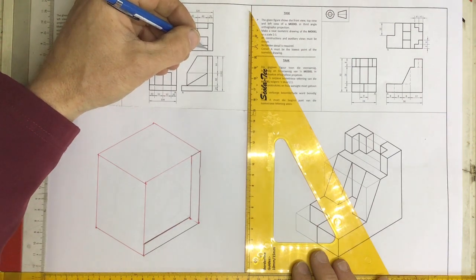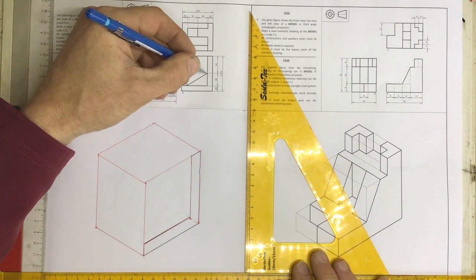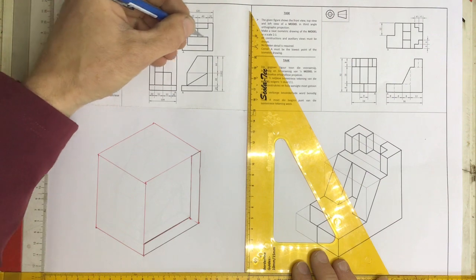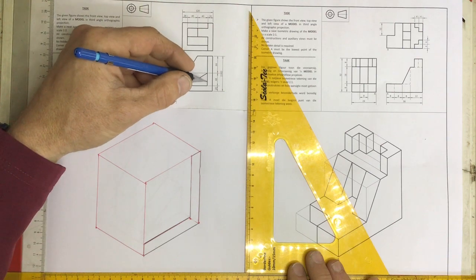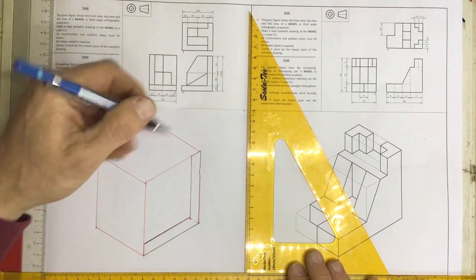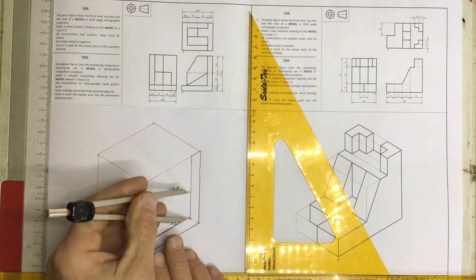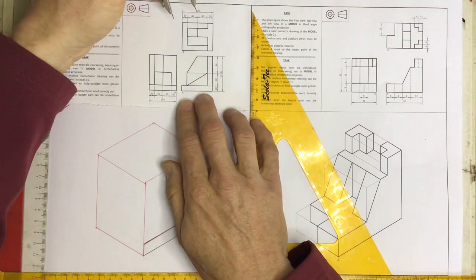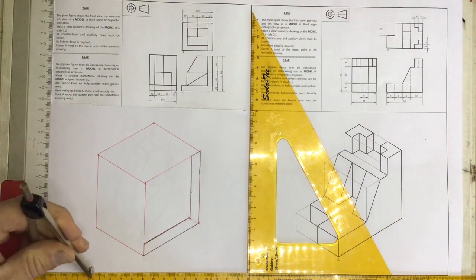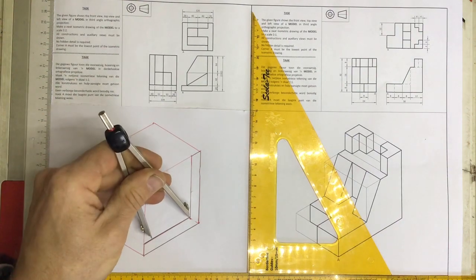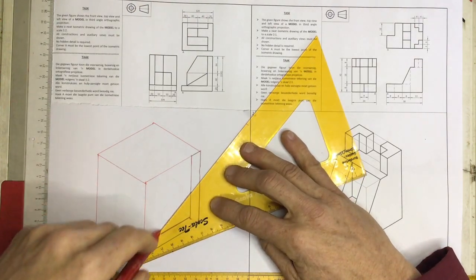This line links up to that slope. Draw in that slope on your front view as a construction line. It goes 48 millimeters up, which is 24 scaled, and 80 millimeters across, which is 40 scaled. Draw in the slope as a construction line.